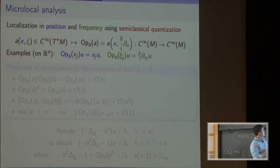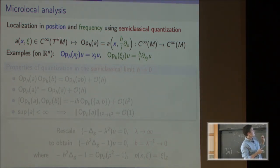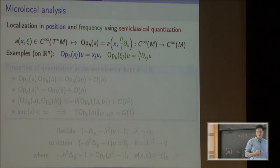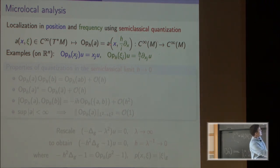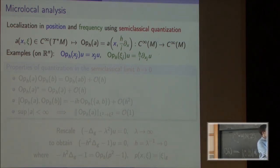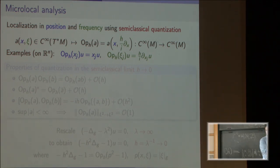This slide will have some technical simplifications, so microlocal analysts can delight in finding the mistakes. If I take a function on the cotangent bundle — a function of position and the cotangent vector xi, which will be identified with frequency or momentum of the classical system — I can quantize it to obtain an operator acting on functions on M. Formally, you take your symbol a and replace the momentum variable with h over i times the differential operator. This needs to be defined more carefully than just substituting a polynomial.